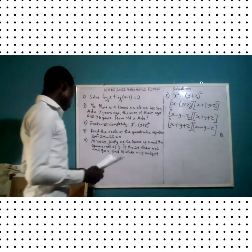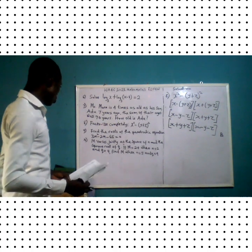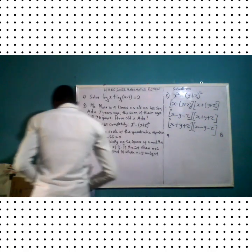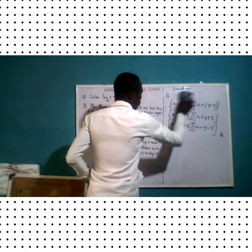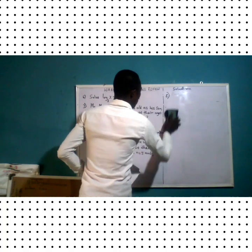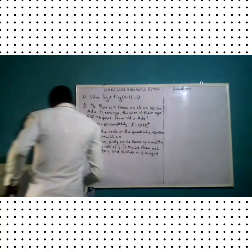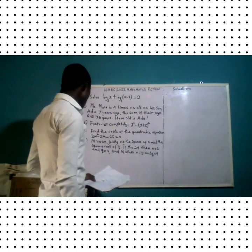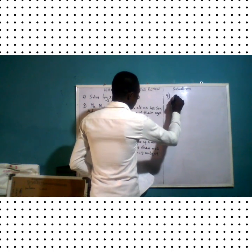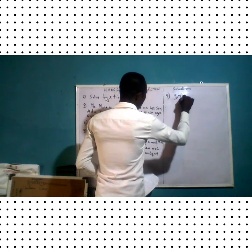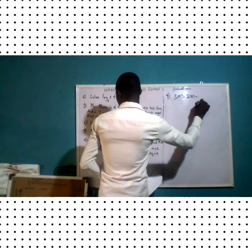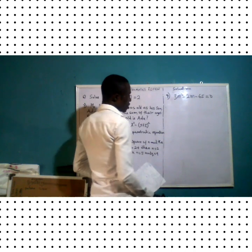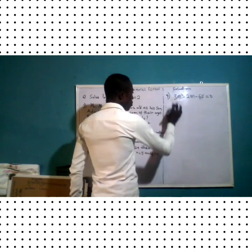Let's go to question number nine. We are asked to find the roots of the quadratic equation. The equation is 3m squared minus 2m minus 65 equals zero. We solve this by factorization.